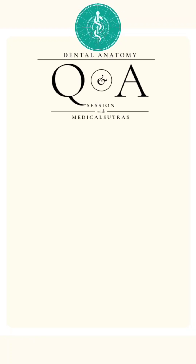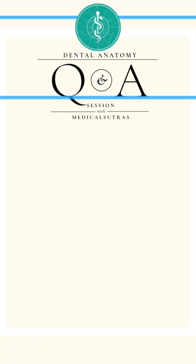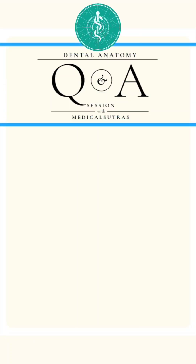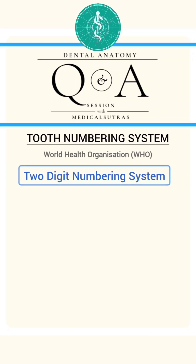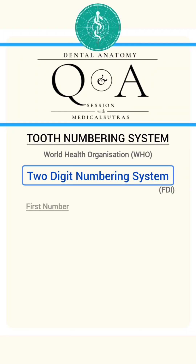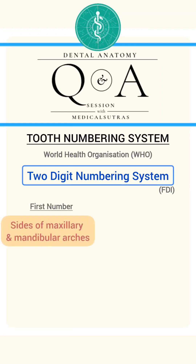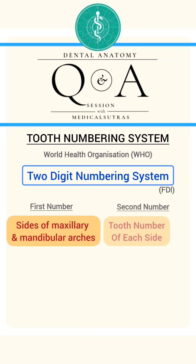Hello everyone and welcome to the Q&A session with Medical Sutras. Let's discuss the tooth numbering system today. The World Health Organization has adopted a two-digit system proposed by the Federation Dentaire Internationally. The first number indicates the side of the maxillary and mandibular arches, and the second number represents the tooth number.